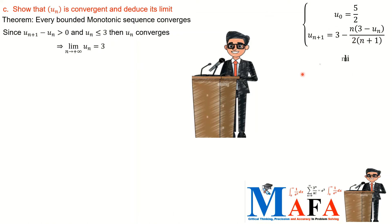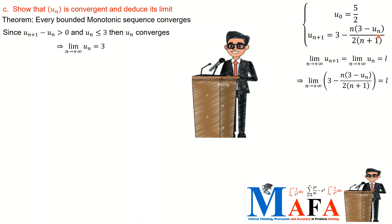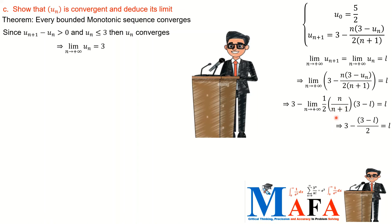A monotonically increasing sequence bounded from above converges to the upper bound. We can also derive the limit directly: as n tends to infinity, u_{n+1} and u_n share the same limit L. Taking limits of both sides of the recurrence, L equals 3 minus (limit of the remaining term). As n tends to infinity, the fractional correction term tends to zero, giving L equal to 3. Since the question asks us to deduce rather than find, we apply the theorem directly. The limit is 3.